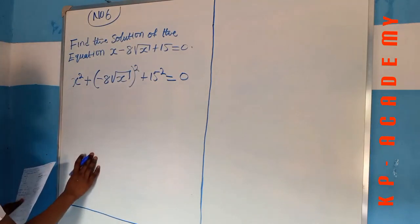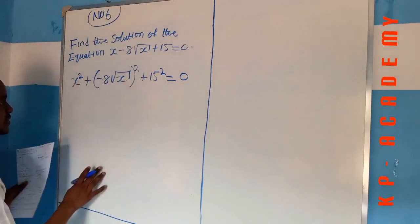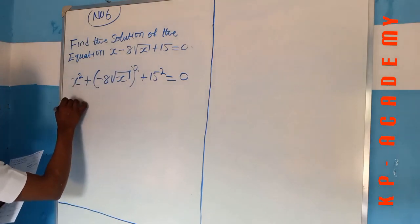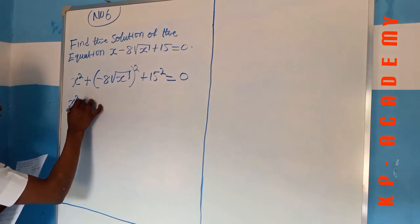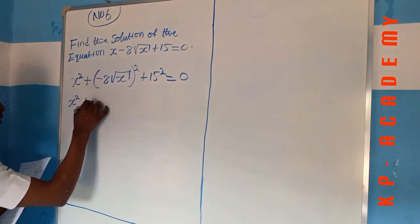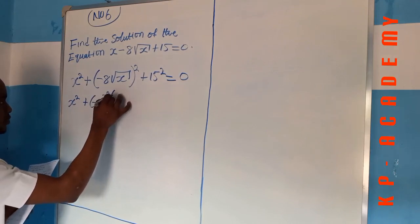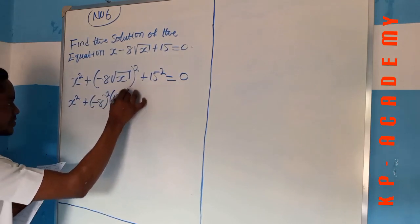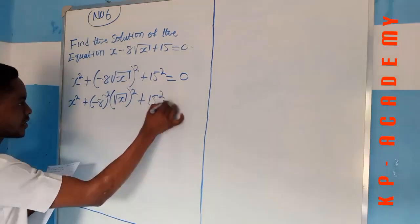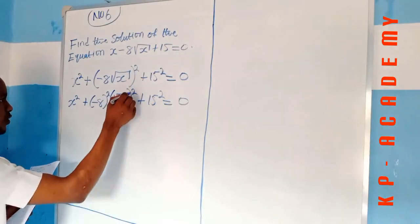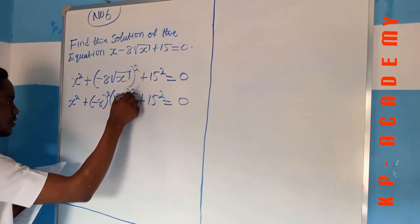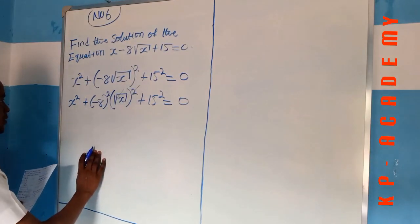So the next thing to be done now is to evaluate the square. So we have x squared plus minus 8 all squared into square root of x all squared plus 15 squared equal to 0. So of course, this square will cancel this square root.